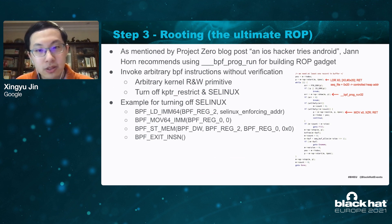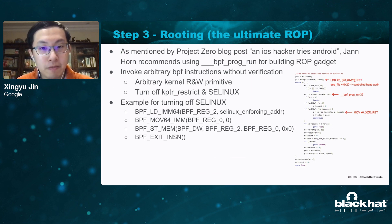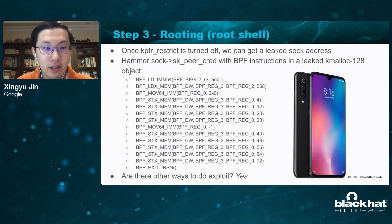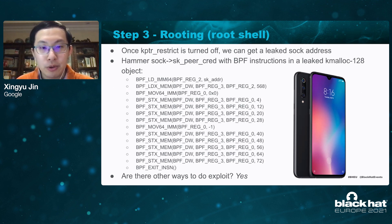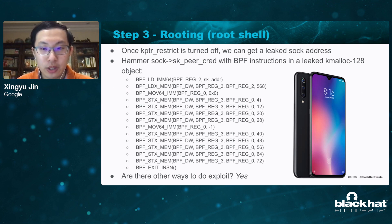As a consequence, we can get an arbitrary kernel read and write primitive. For instance, we may disable kernel pointer restriction and SELinux. We can also modify the cred structure by executing arbitrary BPF instructions to finally get a root shell. The BPF instructions can be placed in a kmalloc-128 byte object since these BPF instructions are just 128 bytes.